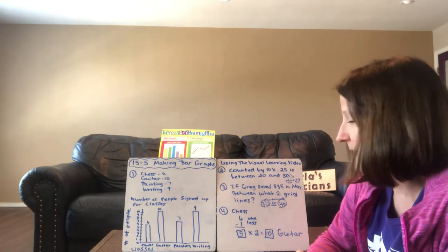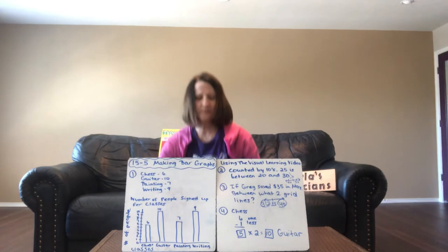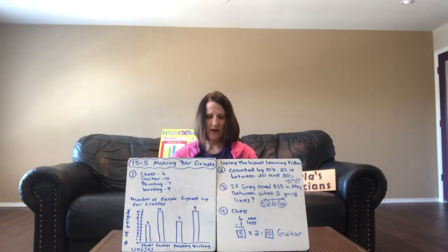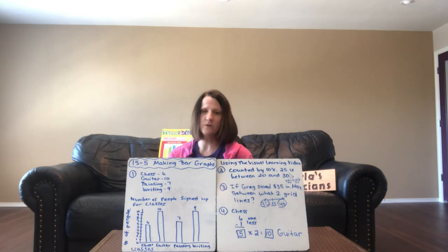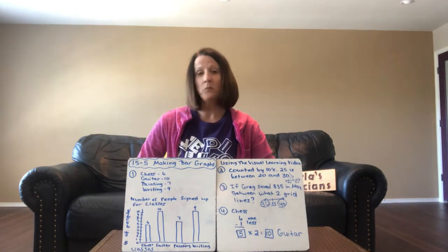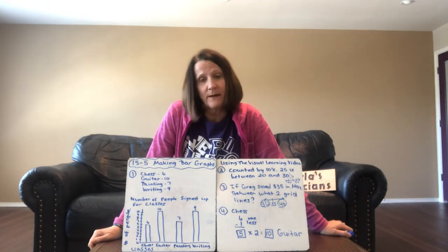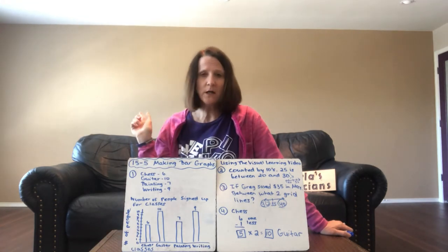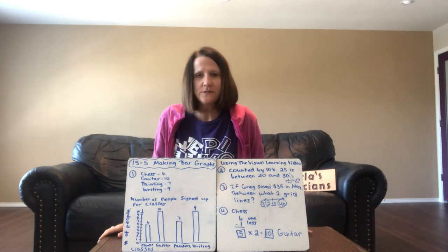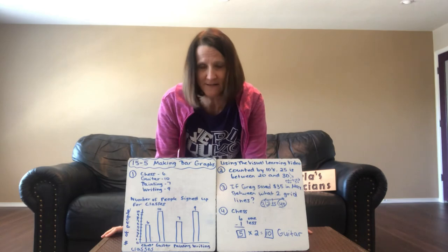As always, after you do that, when you do your independent practice, you have a table, complete the bar graph. On the back, do number nine, that's the one with the star by it, and then you can pick one more or do all of them because the more you practice, the better off you're going to be. Either use it or lose it, we want to use it.